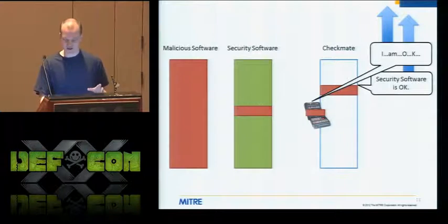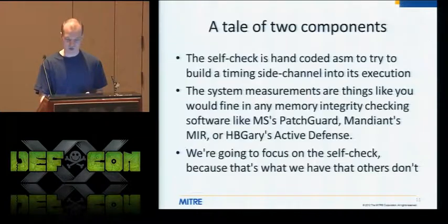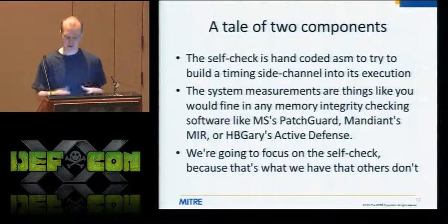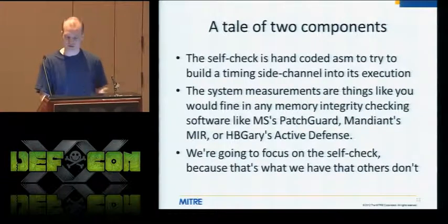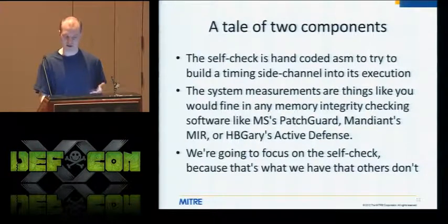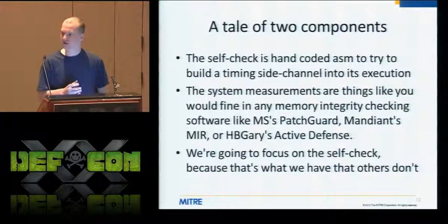There's a lot of work that has to be done to get this software to behave in this specific way, and we'll talk through the design parameters that are necessary. Checkmate has two components, but we're only going to talk about one today: measuring other security software and measuring the operating system itself. This is analogous to other memory integrity verification systems. Patch Guard in Windows does some Windows self-checking. We're focusing on the self-checking mechanism — this is what other security software doesn't have.